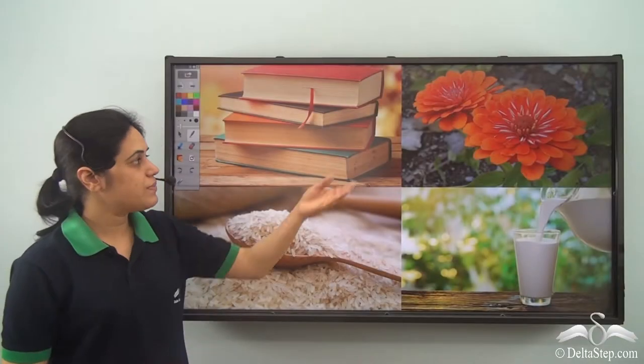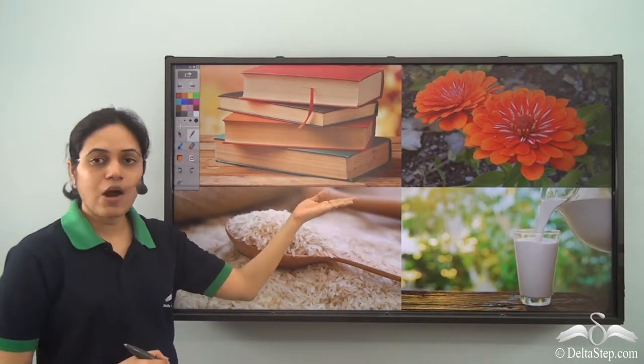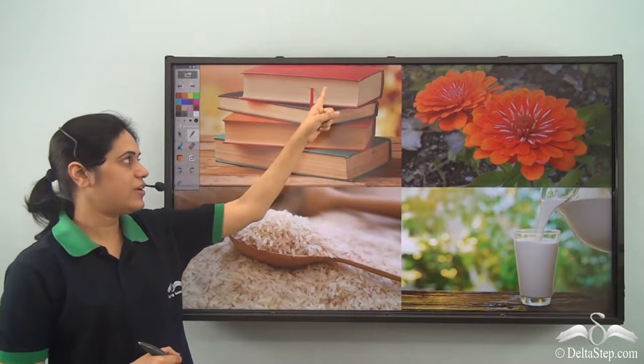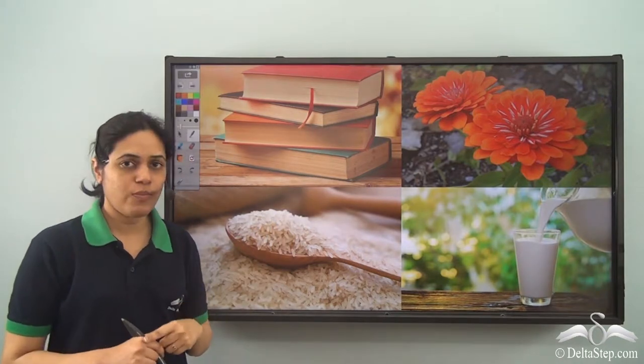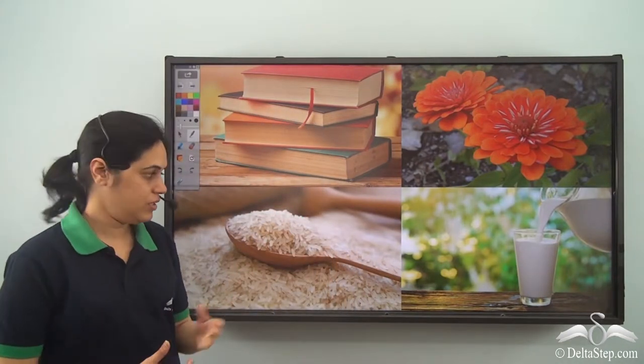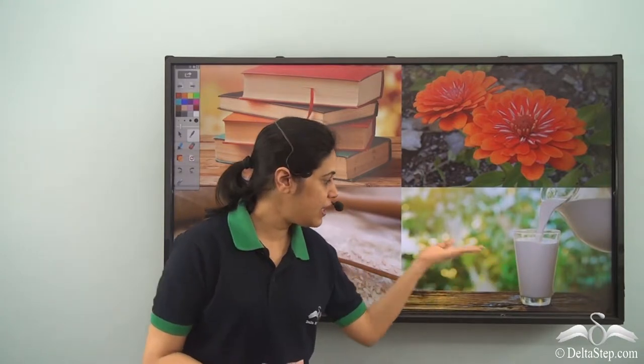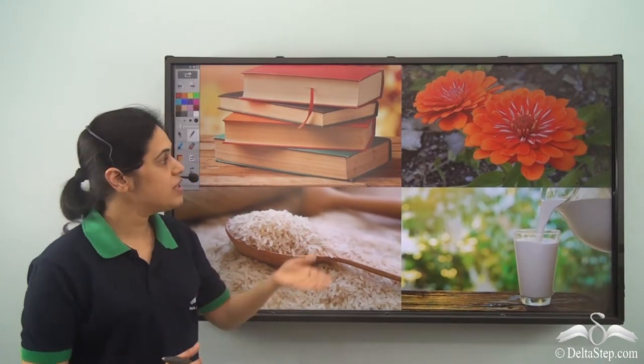What is the difference between these two and these two images? Well, I can count the number of books and the number of flowers. I can count that there are four books and over here I have two flowers. But can you count the number of rice here? It's impossible to count these grains of rice. Can you count the milk in this glass? It's impossible to do that. So, milk and rice cannot be counted whereas books and flowers can be.